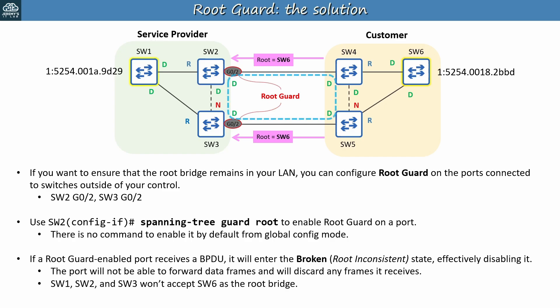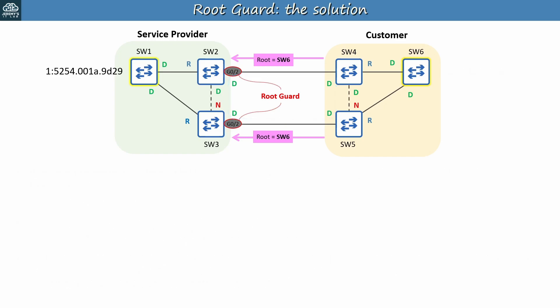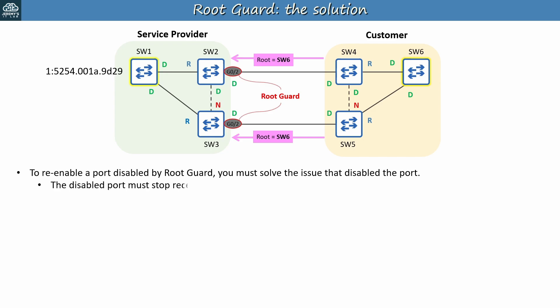Before moving on, I want to point out that SW2-G0/2 and SW3-G0/2, as well as the ports they connect to on SW4 and SW5, are all designated ports. Normally there can only be one designated port per link, but in this case the switches disagree on who the root bridge is. Just remember that in a normal functional spanning tree LAN there should only be one designated port per link, but this is a special case because root guard is blocking the link. Root guard prevented the customer from influencing the service provider's STP topology, solving the problem for the service provider. But that also means the customer can't communicate over the service provider's network. To re-enable a port disabled by root guard, you must solve the issue that disabled the port — in other words, the disabled port needs to stop receiving superior BPDUs.